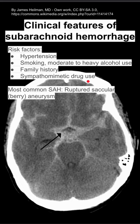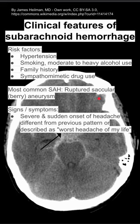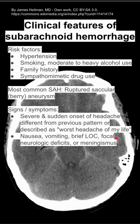The most common type is a ruptured saccular aneurysm, also called a berry aneurysm. The signs and symptoms: patients will have severe and sudden onset of headache, different from their previous pattern of headaches. Oftentimes it's described as the worst headache of my life. Patients can also have nausea, vomiting, brief loss of consciousness, focal neurologic deficits, or meningismus.